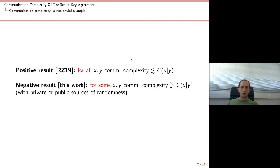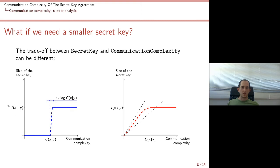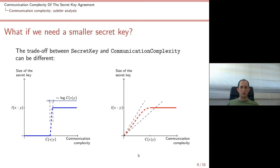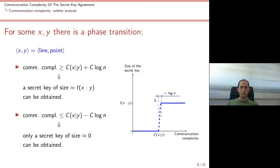One can ask: these results concern establishing a key of size equal to the mutual information of X and Y — what if we want to establish a smaller secret key? Can we use fewer communication bits and establish a smaller secret key? The answer depends on the class of X and Y. We can restrict to some classes instead of the universal class of all strings of size n. For some classes, we see a phase transition. As we gradually increase the communication complexity allowed, we also increase the size of the secret key.